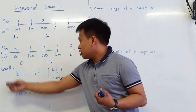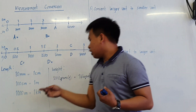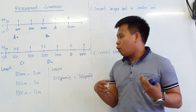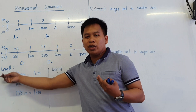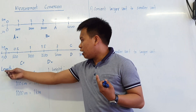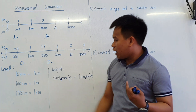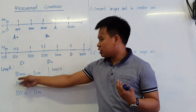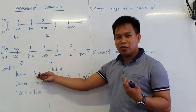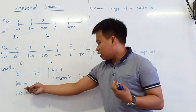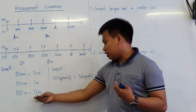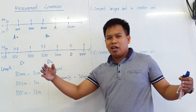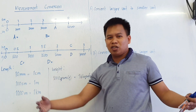So we have a set of examples here. We have the length and then the weight. So we should know what units we are going to use for the length. For example, we have mm, which is the millimeter, and then the centimeter, and then the meter, and then the kilometer. That is for the length, for the distance, or how long.